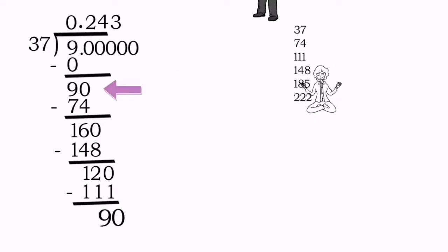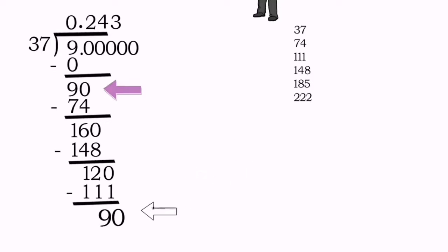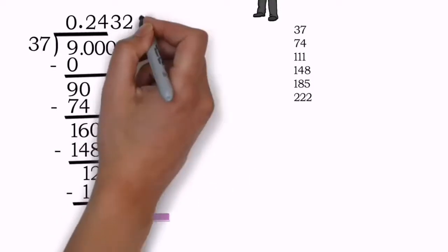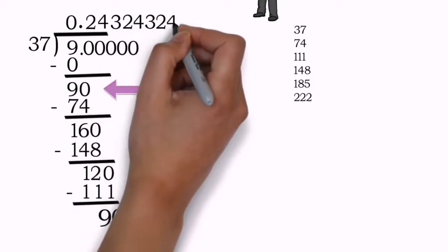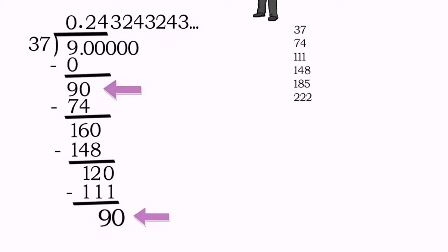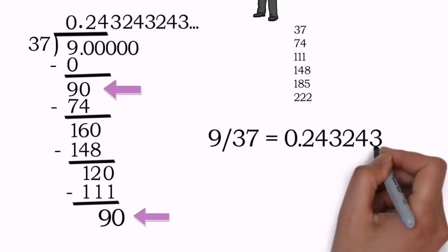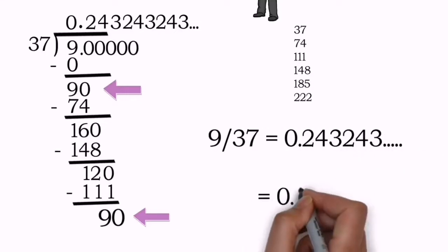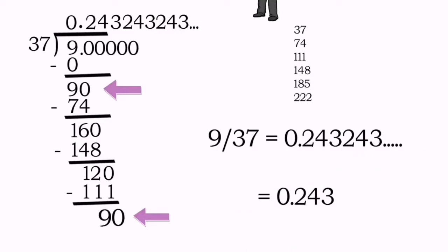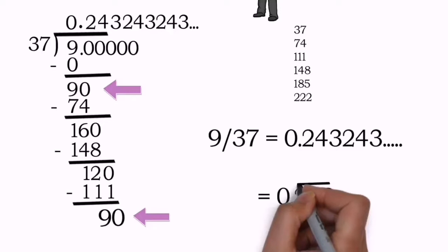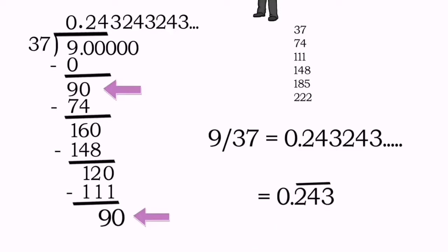After taking the next 0, the remainder 9 becomes 90 again. Notice we had 90 at the first step and we are back to 90 — so 243 will repeat itself again and again. Therefore, 9 upon 37 equals 0.243 recurring, and since 243 is repeating we give a bar sign over it.